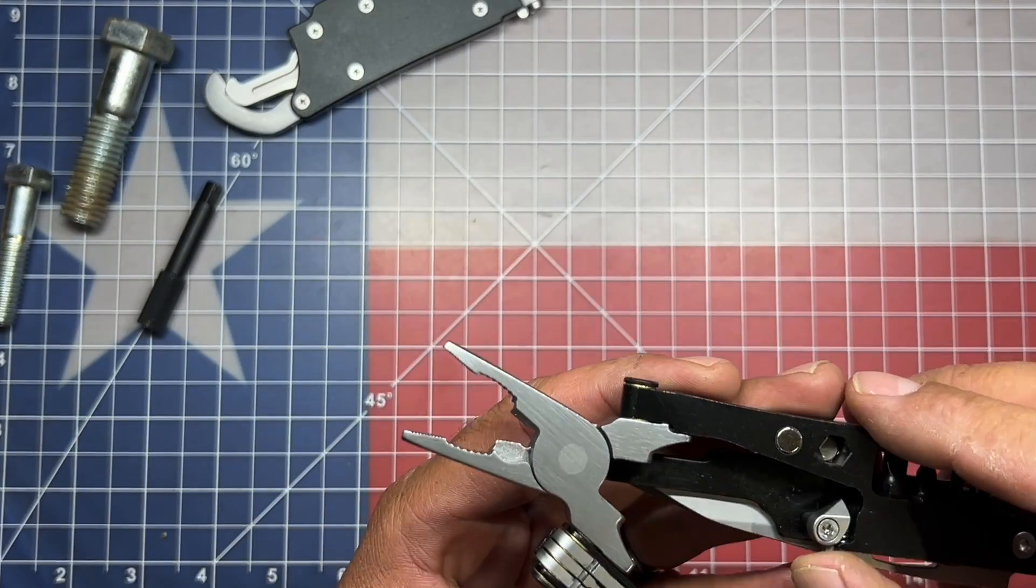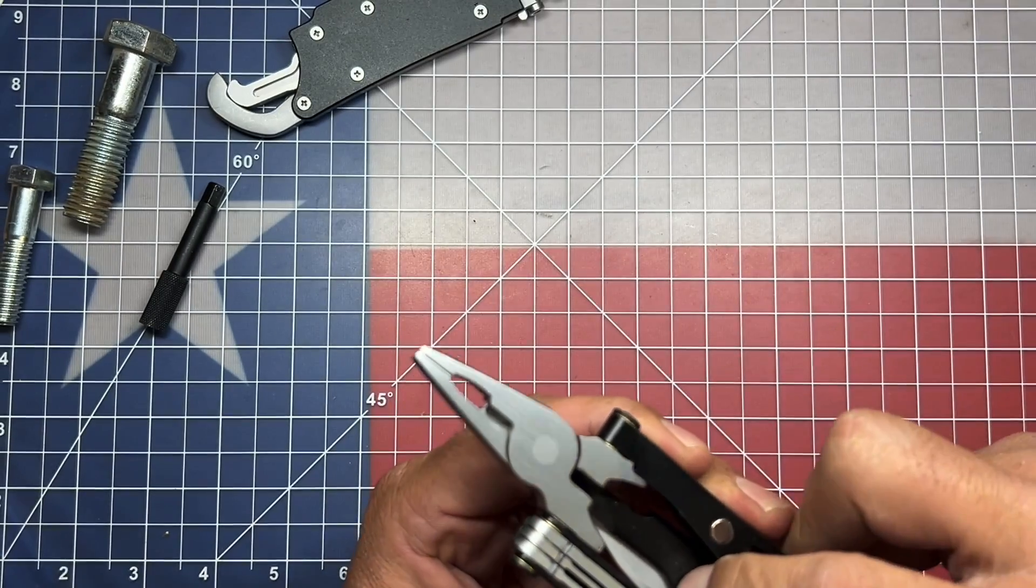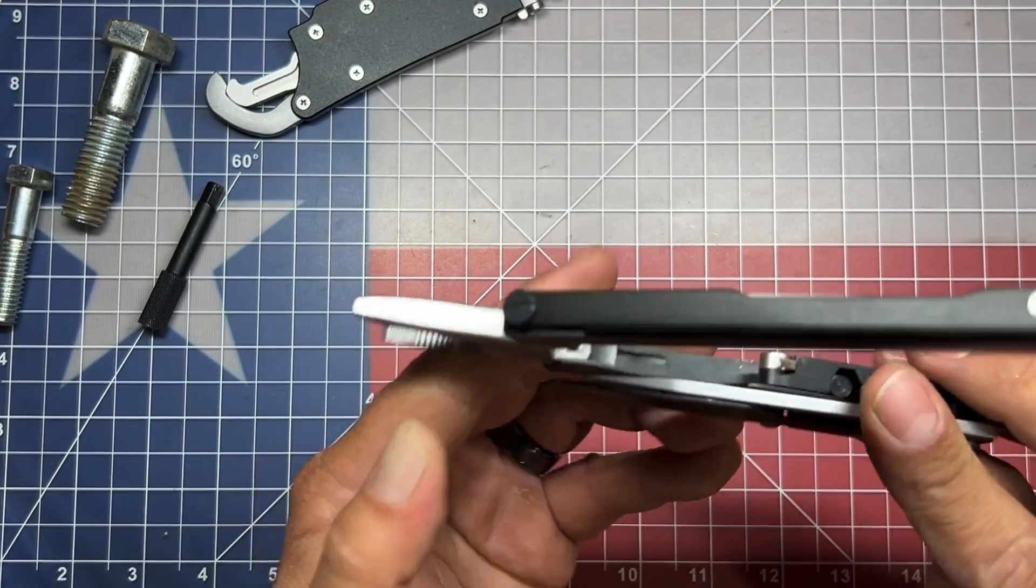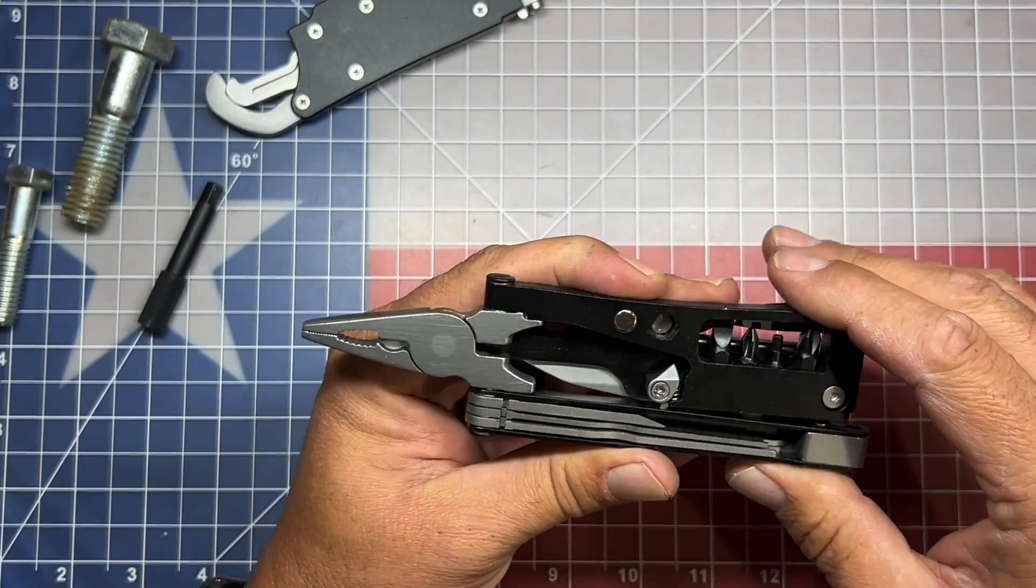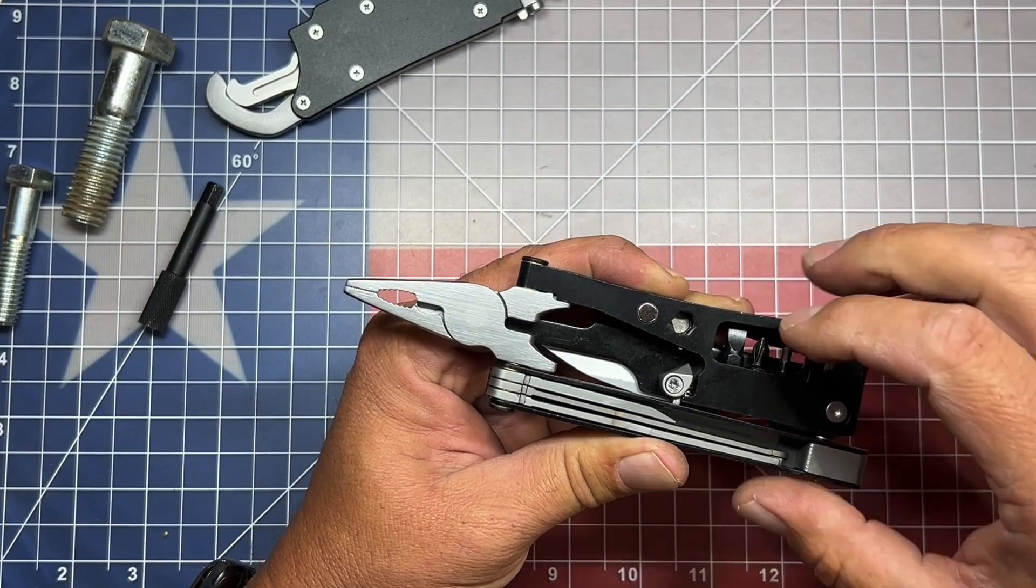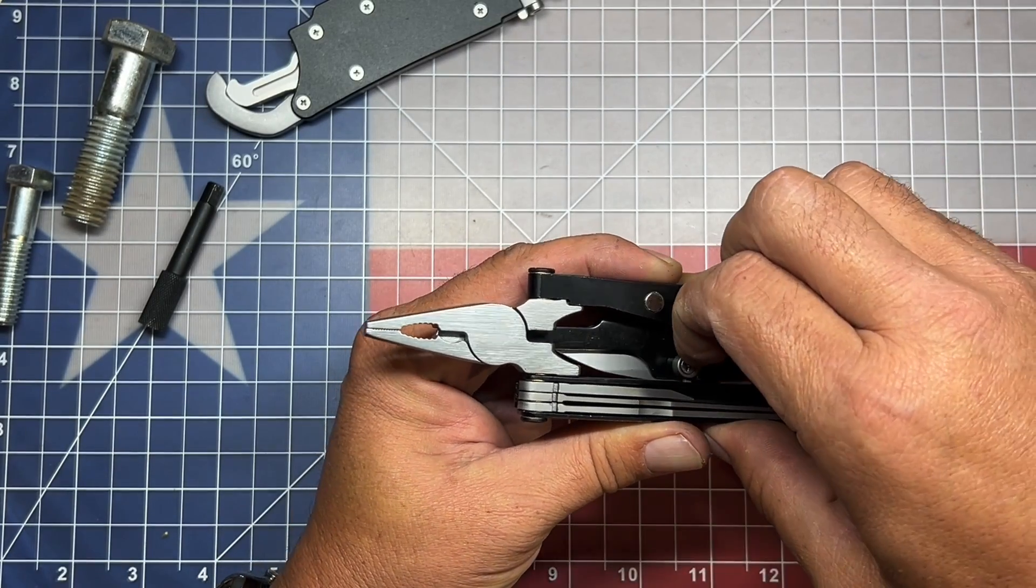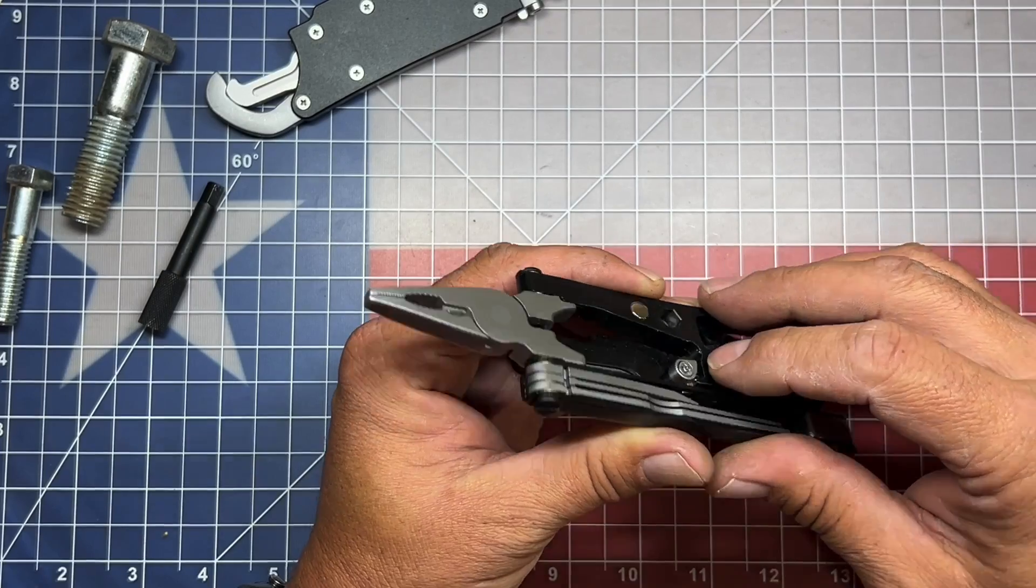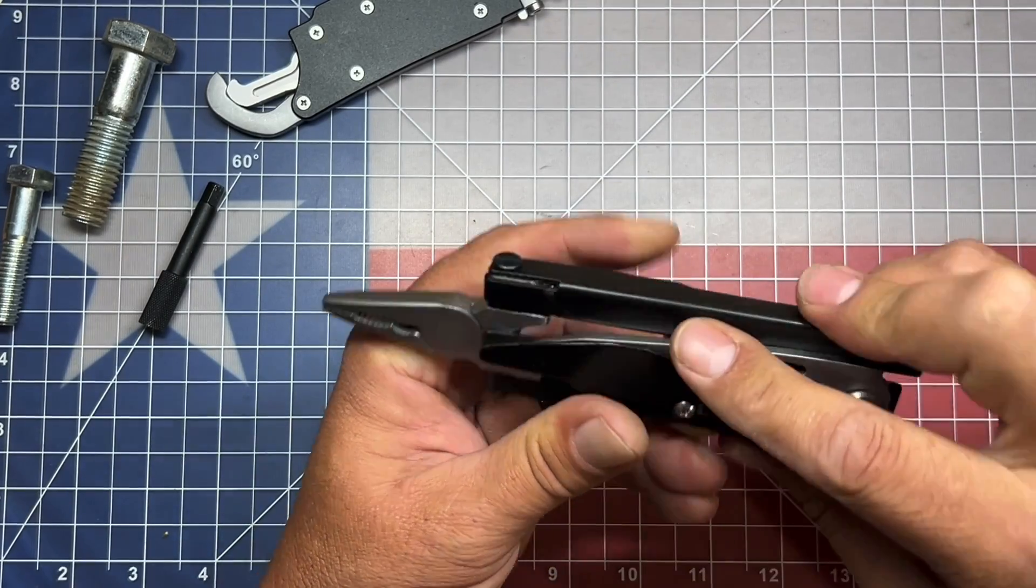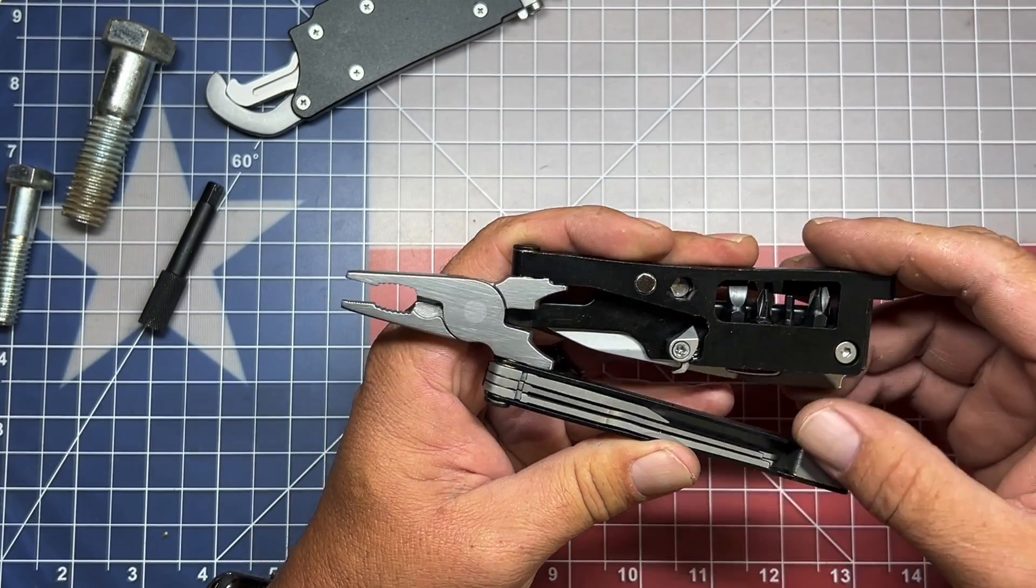Now we have another lock here. So how does this work? I'm not sure how this lock engages, or if that engages when... so there's a lock mechanism here that has a spring in it. But I can't really figure out how that's supposed to work, or unless when you have the tool completely closed, that that locks into place.